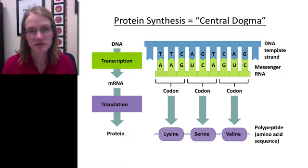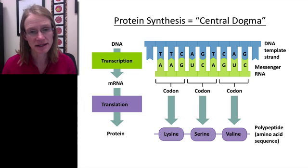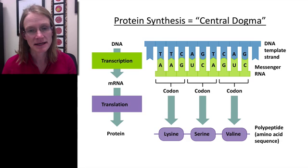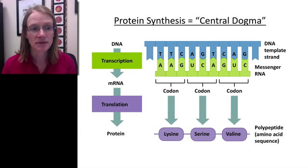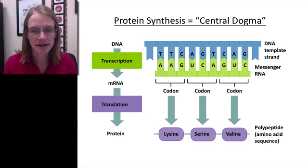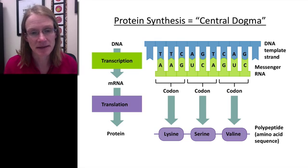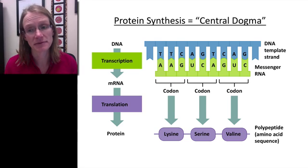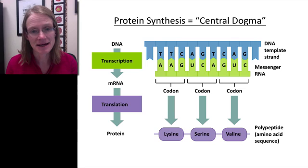To make proteins we first have to start out with DNA. DNA is double-stranded, but we can open that up — unzip it — and use the template to transcribe it into RNA, specifically into mRNA. mRNA is made up of nucleotides just like DNA.